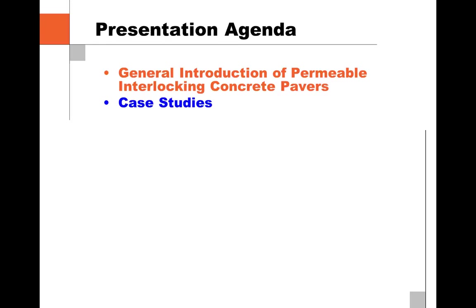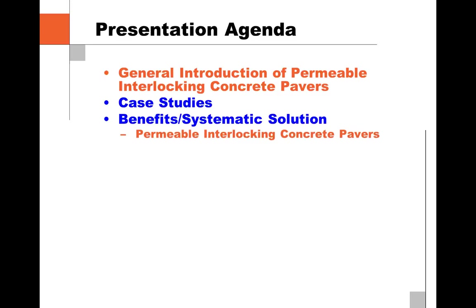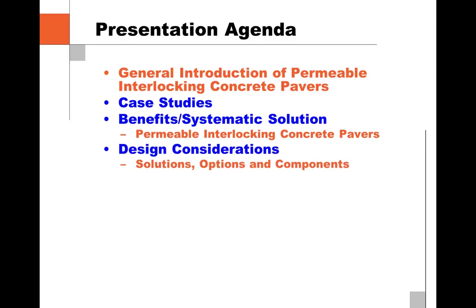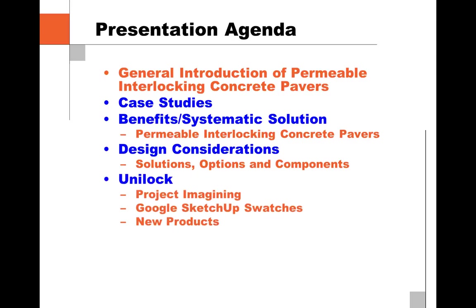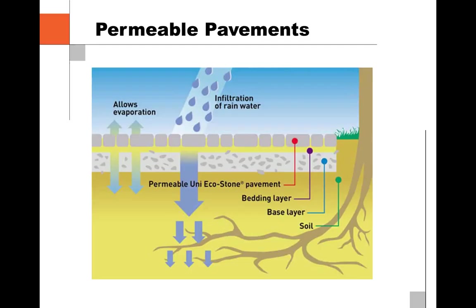The agenda: we'll start off with some general introductions to permeable interlocking concrete pavers. We'll look at a few case studies around mostly the Chicagoland area, which has really grown over the last five to ten years. We'll take a look at the different benefits and systematic solutions, then talk about design considerations, solutions, opportunities, and the different components and materials in a permeable system so you understand which materials to call out and which ones are going to work. And if we have time, I'll give you a quick commercial on Unilock.